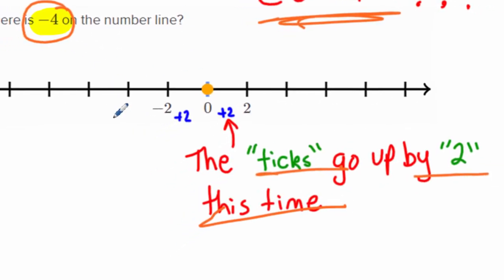So negative four would be right here, right? Negative two, negative four, negative six, negative eight. So I would move this little mark right here.